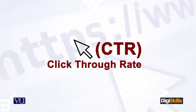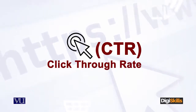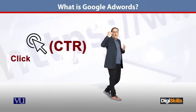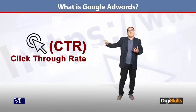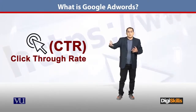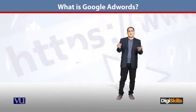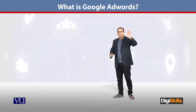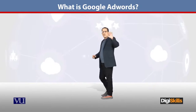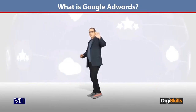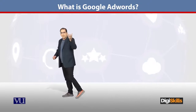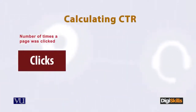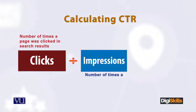The next concept is CTR — Click Through Rate. CTR is actually how many times people have clicked on the ad. The formula for CTR is: number of clicks divided by number of impressions. So out of all my impressions, how many received a click — that gives us the CTR.